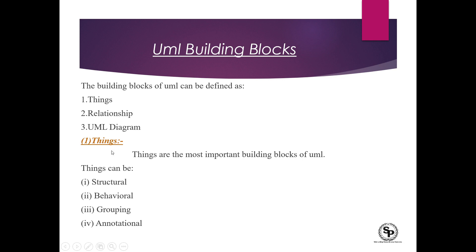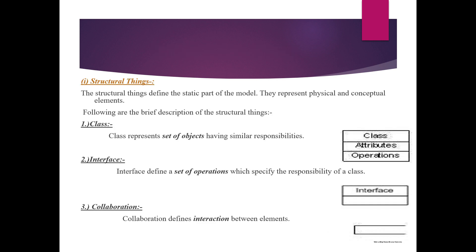Things are the most important building block of UML. Things can be structural, behavioral, grouping, and annotational. Structural things define the static part of the model — the part that is not movable. They represent the physical and conceptual elements of a software system design when we make a blueprint of any software system before it is developed.